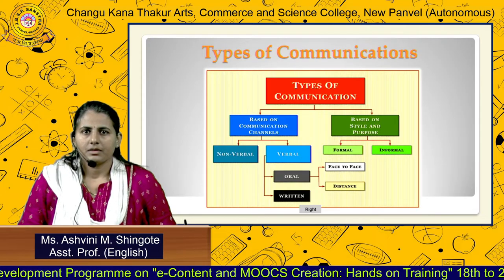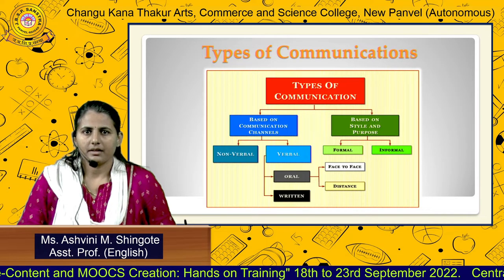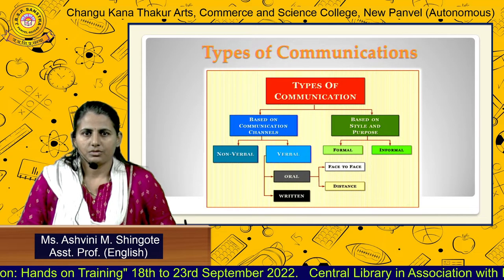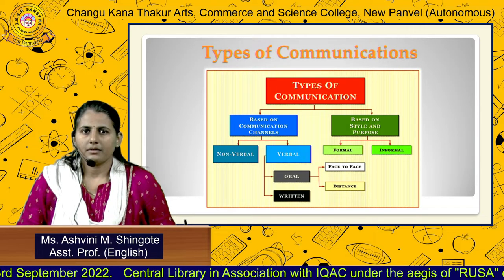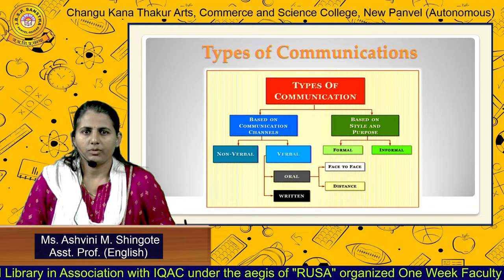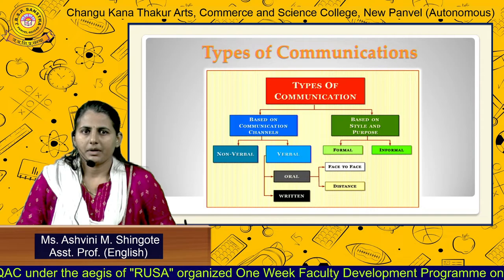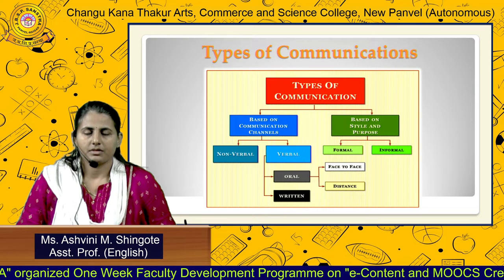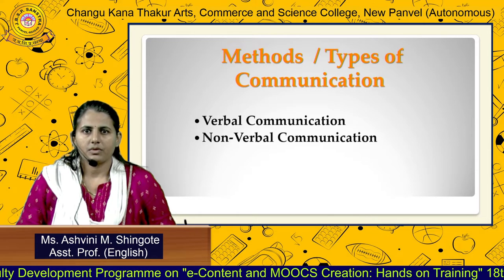There are various types of communication. First is based on communication channels, which includes verbal and nonverbal communication. Verbal communication is divided into two types: oral communication and written communication. Oral communication is further divided into face-to-face communication and distance communication. Another type is based on style and purpose, which has two types: formal communication and informal communication.